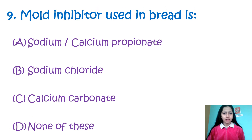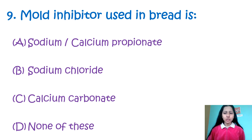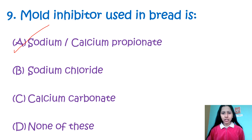Question number 9: Mold inhibitor used in bread is — Option A: sodium/calcium propionate, B: sodium chloride, C: calcium carbonate, D: none of these. The mold inhibitor used in bread is option number A — sodium propionate and calcium propionate. These are synthetic inhibitors mainly used to inhibit molds in bread.